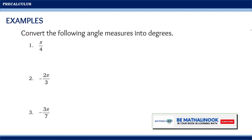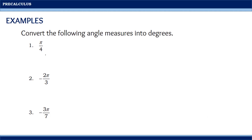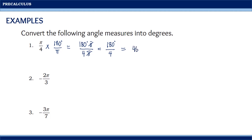Let us consider the following examples. Convert the following angle measures into degrees. Since there is no symbol, these angles are in radian measure. Converting them into degrees, we multiply by 180 degrees over π. So we have π times 180 degrees over 4 times π; canceling π gives 180 degrees divided by 4, which equals 45 degrees. Therefore, π over 4 is equal to 45 degrees.